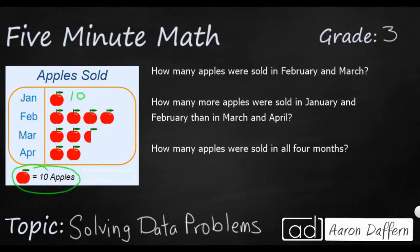So that January has 10 apples. February's got 10, 20, 30, 40. So we'll put 40 if you want to skip count by tens.